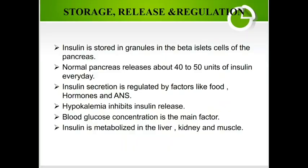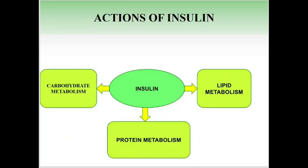Regarding storage, release, and regulation: insulin is stored in granules in the beta cells of the islets of the pancreas. Normally, the pancreas releases about 40 to 50 units of insulin every day. Insulin secretion is regulated by factors such as food, hormones, and the autonomic nervous system. Hypokalemia inhibits insulin release. Blood glucose concentration is the main regulatory factor. Insulin is metabolized in the liver, kidney, and muscle.